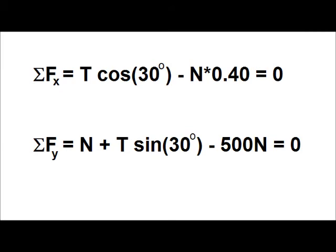Moving on to step three. I will set up the vector equations that correspond to the physical laws that were already determined to apply to the situations in step two. In the horizontal, we have the tension times cosine of 30 degrees minus the normal force times .40 equals zero. In the vertical, we have the tension times sine of 30 degrees plus the normal force minus the gravitational force, which is 500 newtons, equal to zero.